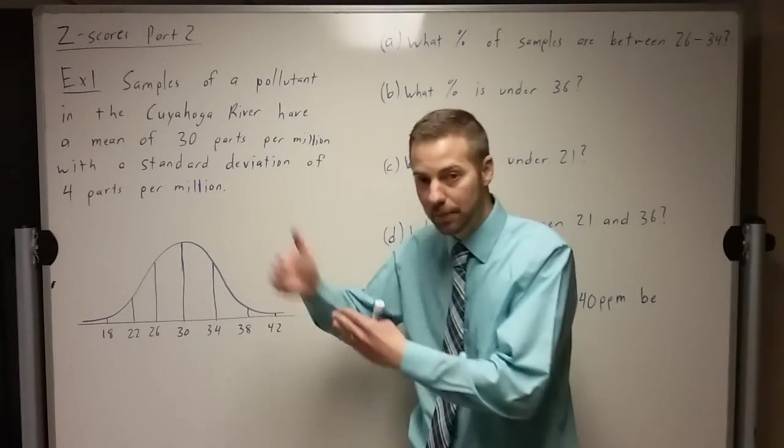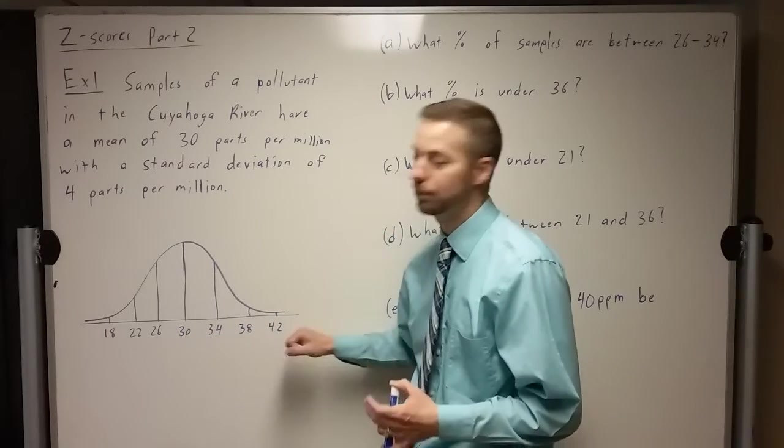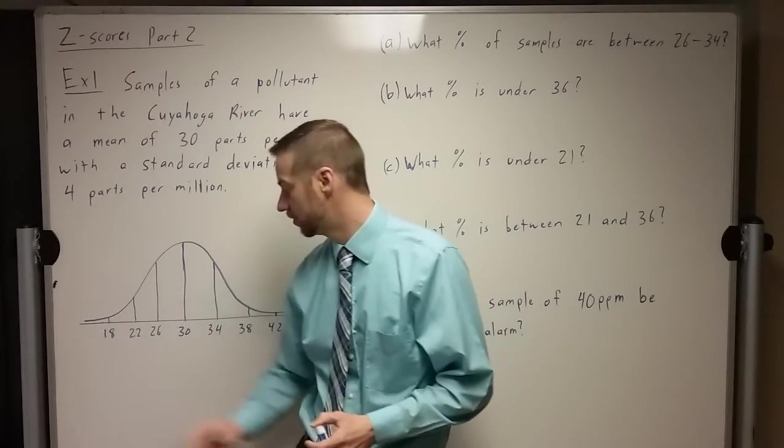I drew out a visual here. It's not completely necessary, but sometimes I think it helps just to see this normal curve with where everything would fall. If I put this information on here going by standard deviations, we have 30 right here in the middle. Going up by 4 each time gives us those if we go at 3 standard deviations. Going down 3 standard deviations gives us those points.